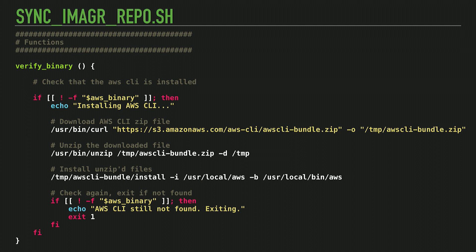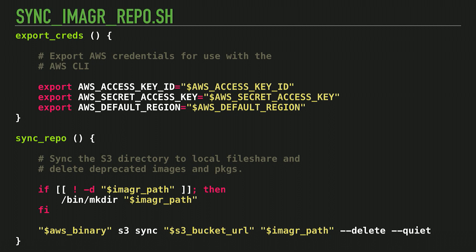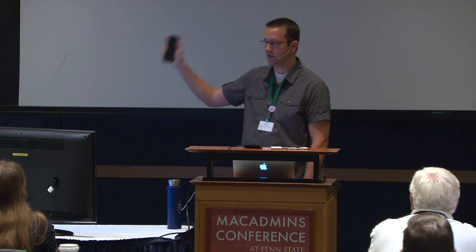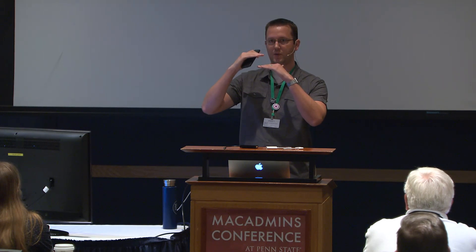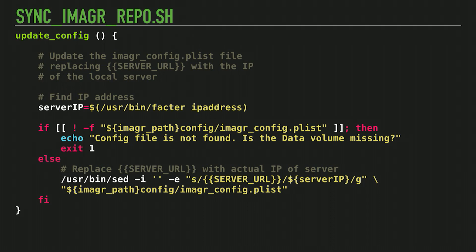This next part was heavily influenced by some of Rich Troughton's scripts on GitHub. I verify that the AWS CLI is in fact installed on the server. If it's not, I install it using those same three commands. If it's still not found after installation, I just exit because there's no point in continuing. AWS CLI still needs those credentials as environment variables, so I export them in the script, and then I sync the Imager repository — running the same command in reverse. The destination is now the source, the source is the destination. S3 is the master and we push down. Again, we tell it to delete old files that no longer exist. I also pass a quiet flag so that my Jamf logs stay small.